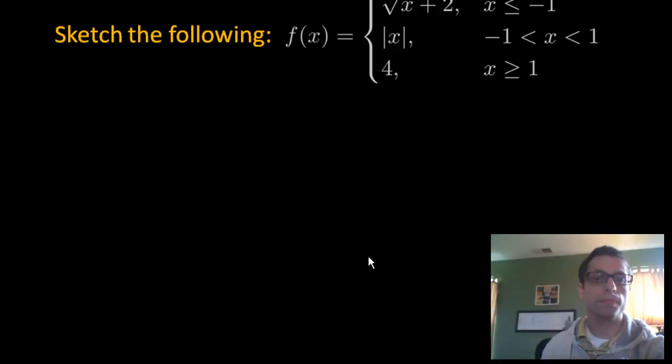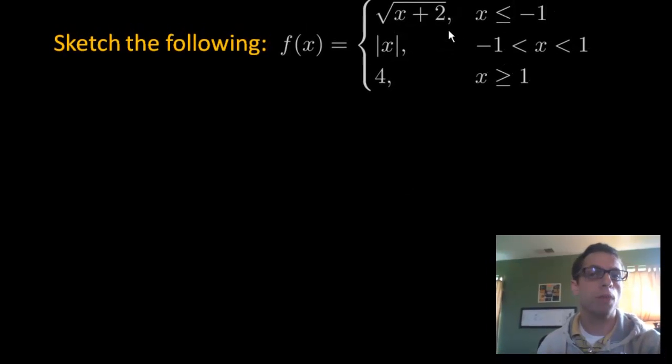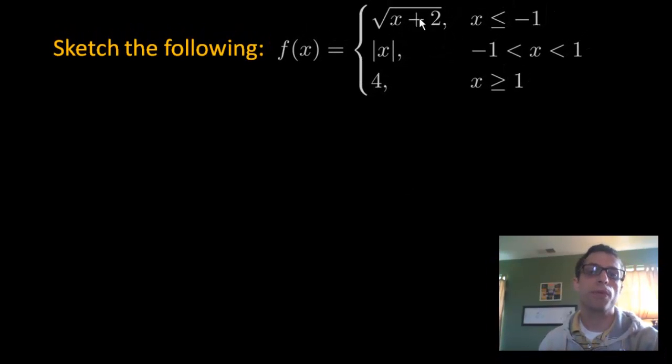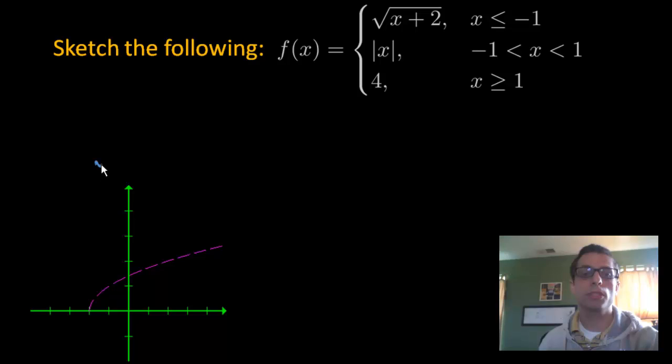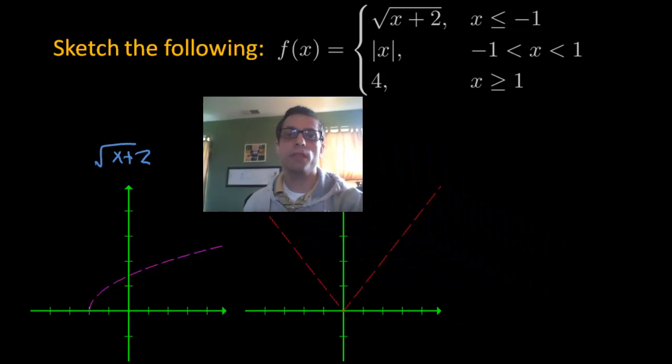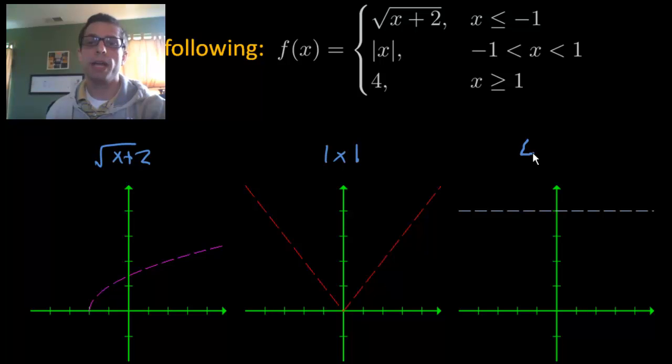Let's take a look at example 2. It's a larger piecewise defined function. We have 3 pieces. We have the square root of x plus 2, we have the absolute value of x, and then we have 4. So let's make sure that we can graph each one on their own. So the square root of x plus 2 is right here. Then we have the absolute value of x. And then we have 4.